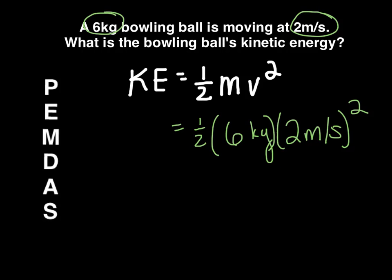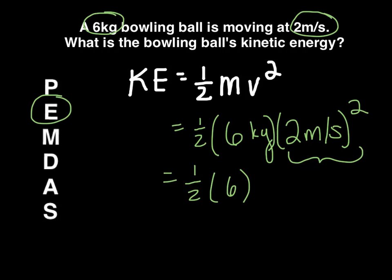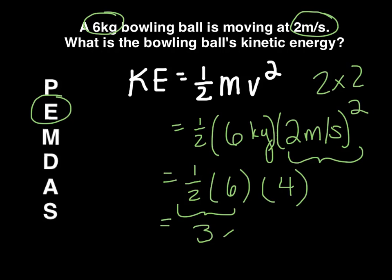Remember from PEMDAS, we start with the exponent. So we have one-half times six, and then two squared. Two times two equals four. Then one-half times six is three, and three times four gives us twelve. So the answer is twelve joules.